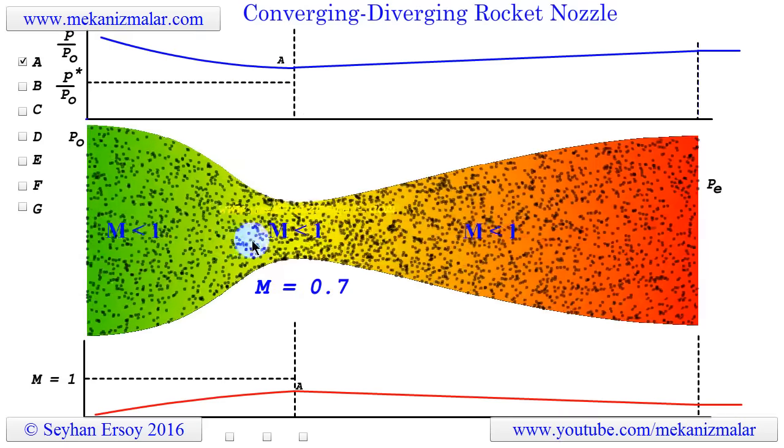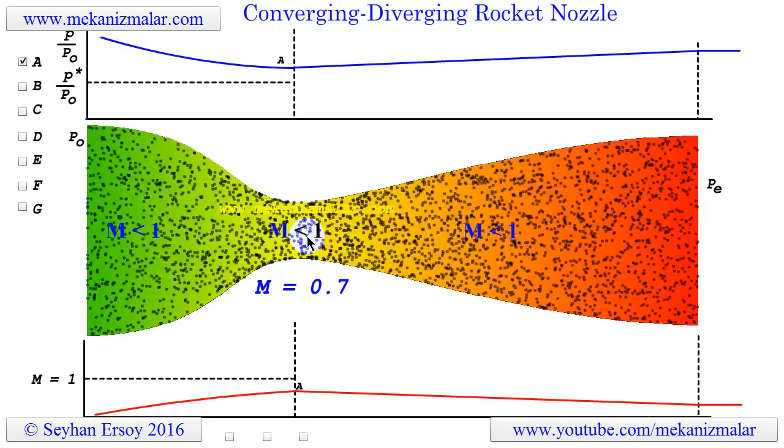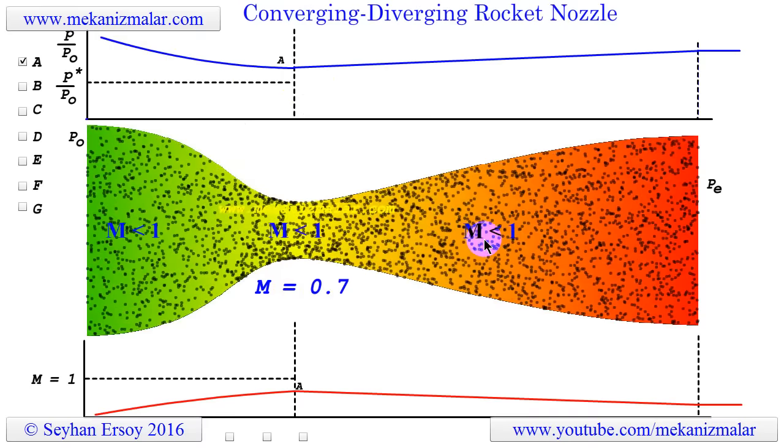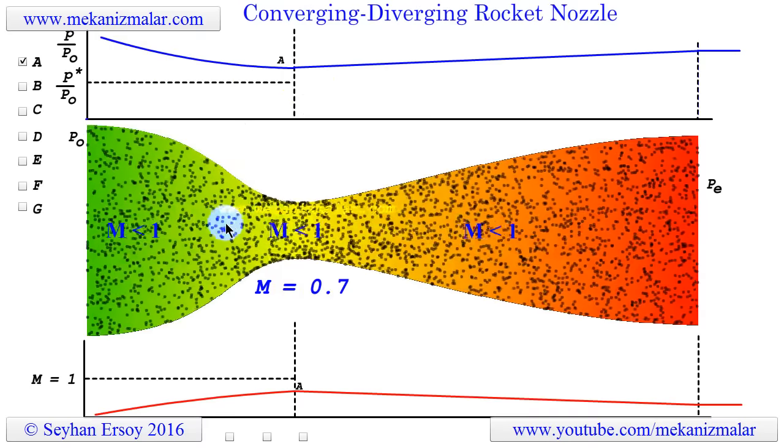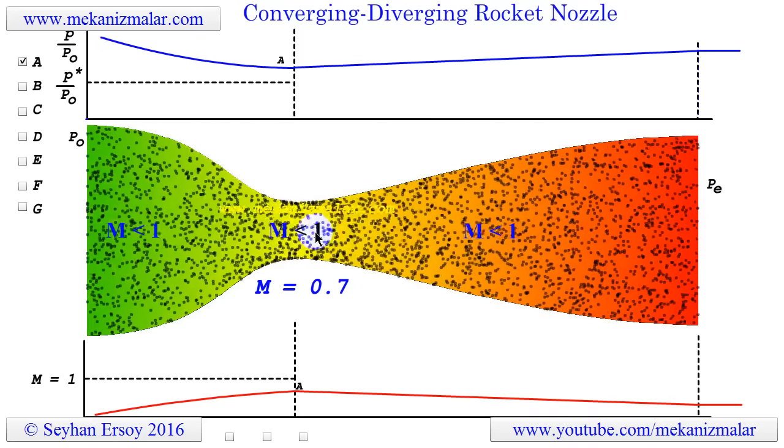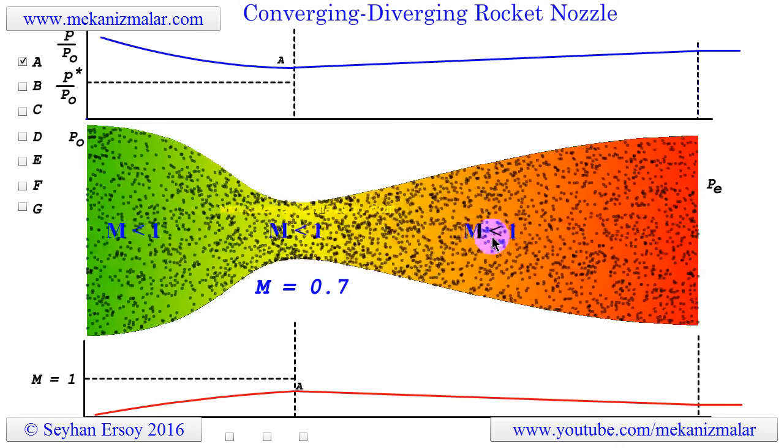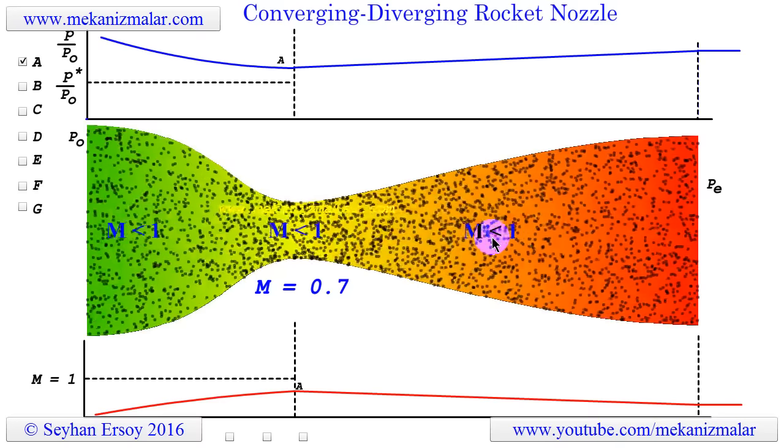However, if we use the Bernoulli and conservation of mass equations for the flow speed calculations, the solution would not be accurate. This is because, with Mach 0.7, the flow speed is no longer incompressible.